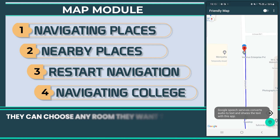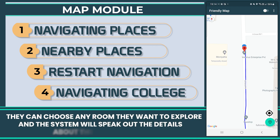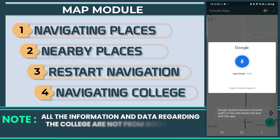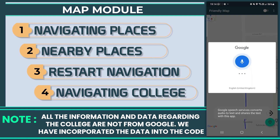They can choose any room they want to explore and the system will speak out the details about that place. Note: all the information and data regarding the college are not from Google — we have incorporated the data directly into the code.